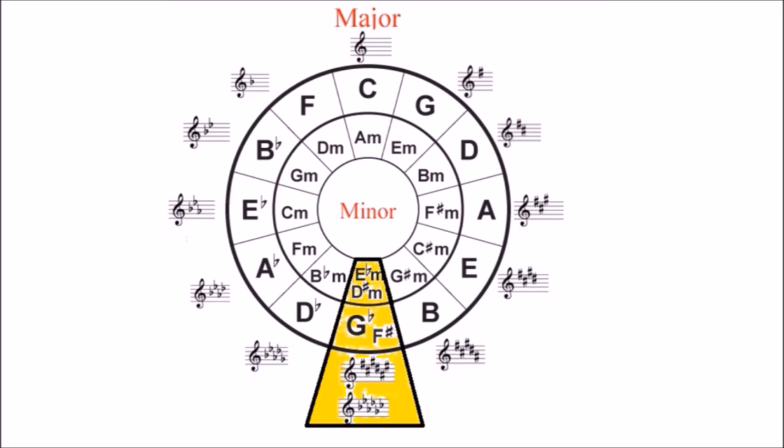That is, if you start at C Major and keep going up a perfect fifth at a time, you will eventually go round a complete circle and arrive back at C Major.